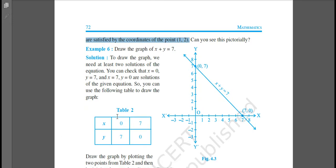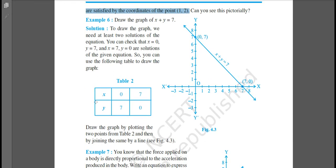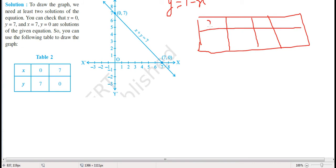Example 6: Let's draw the graph of x plus y equals 7. So for that we need to make a table. Now yesterday also I told you that x plus y is equal to 7, so y is equal to 7 minus x. This is the table. If we have to make a table, we can make a table of values.